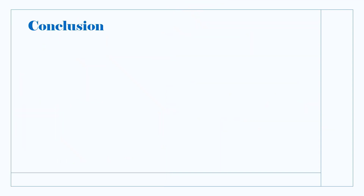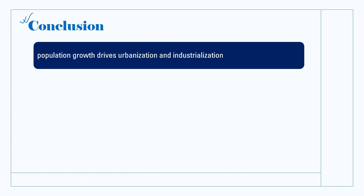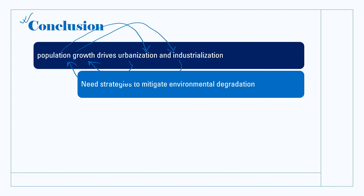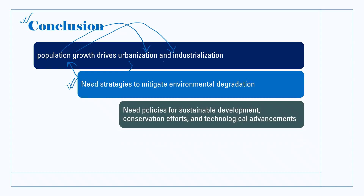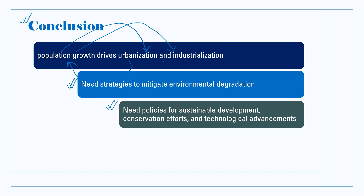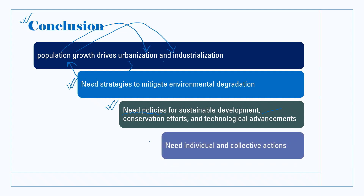Today we have learned that population growth drives urbanization and industrialization, which in turn affect population growth rates and the environment. Addressing the impacts of population growth, urbanization, and industrialization requires adopting sustainable practices. This includes implementing population management measures, promoting sustainable urban planning, and adopting cleaner production processes in industries. It is essential for devising effective policies to achieve sustainable development goals. Individual and collective action at all levels is the need of the time.